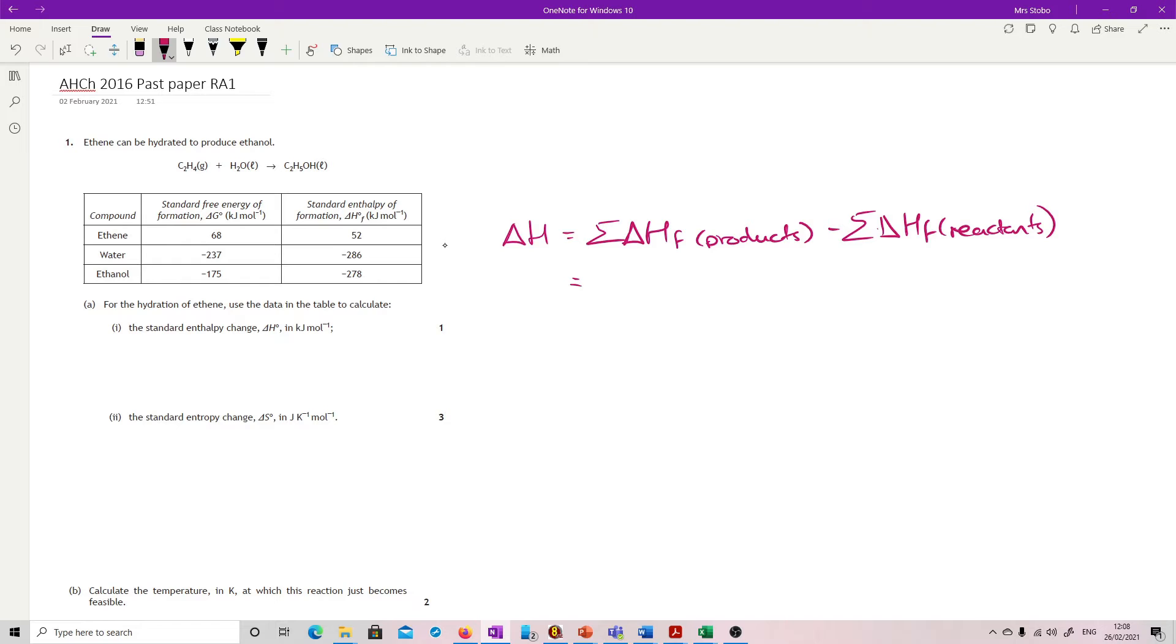And then we plug our numbers in. So our products is our ethanol. So minus 278 minus 52, but it's another minus, so I'm just going to put minus 286. Do all that sum and you get out minus 44 kilojoules per mole.